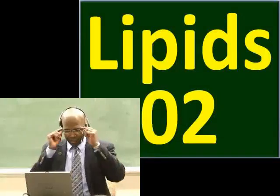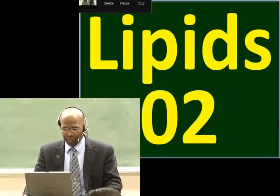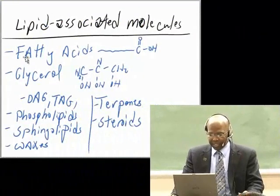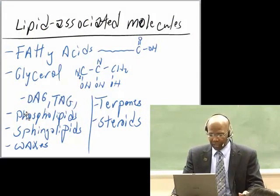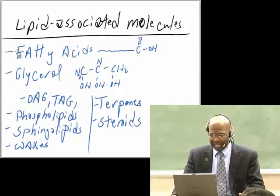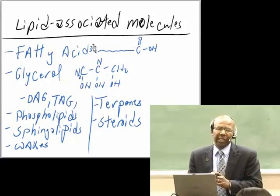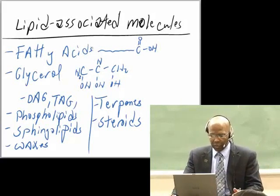Hello students, welcome back. We're going to continue today with lipids part 2. Last time we talked about the molecules discussed in the context of lipids. The lipid-associated molecules include fatty acids, glycerol, diacylglycerol, triglycerides, phospholipids, sphingolipids, waxes, terpenes, and steroids. Last time we talked about fatty acids and drew their structure. Today we're going to discuss a shorthand way of writing molecules, especially fatty acids.